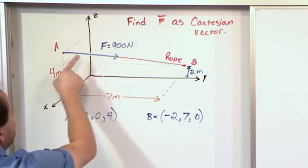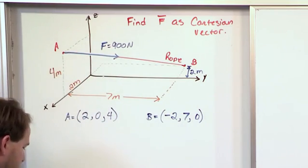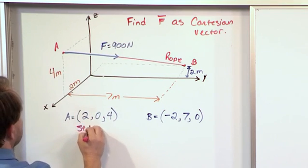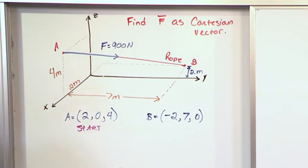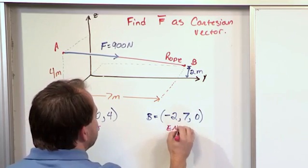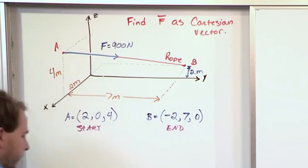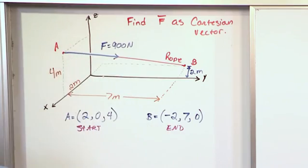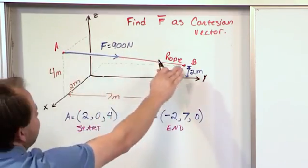Now, because the arrow is pointing from A to B, we're basically starting at point A in terms of defining a direction, and we're ending at point B. So if I wanted to define the position vector that points along this direction here from A to B,